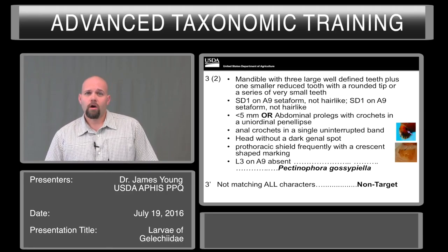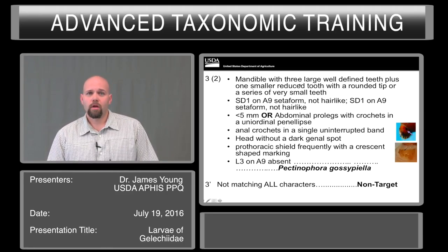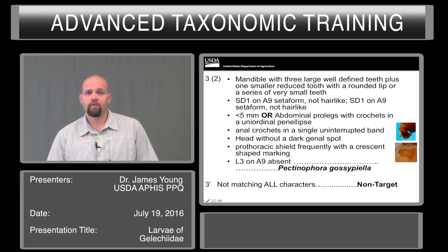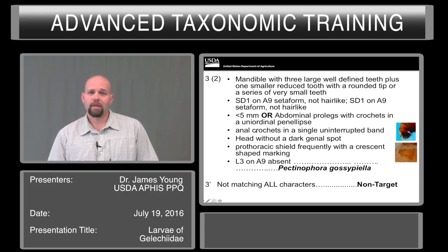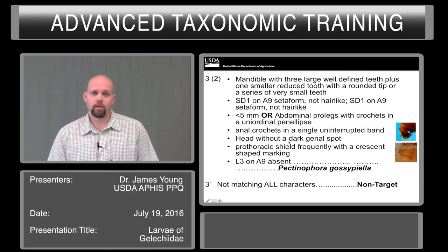We have a large number of characters here presented for Pectinophora and Gossypiella. Again, you have that mandible character, SD1 on A9, and the size. We talked about the anal crochets before. There are a few other characters you should note at this point.